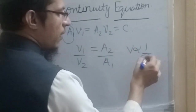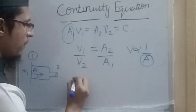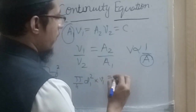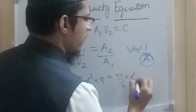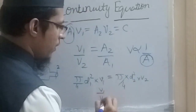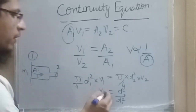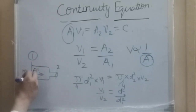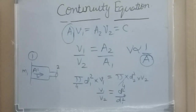For a circular pipe, the area at section 1 is pi over 4 times d1-squared, and at section 2 it is pi over 4 times d2-squared. So V1 over V2 equals d2-squared over d1-squared, meaning velocity is inversely proportional to the square of the diameter. A larger diameter gives lower velocity, and a smaller diameter gives higher velocity.